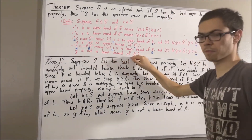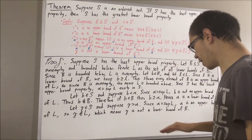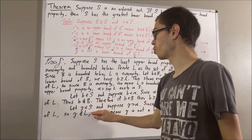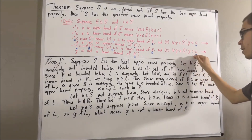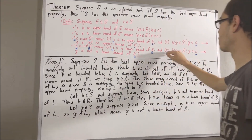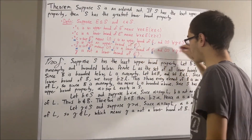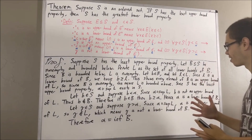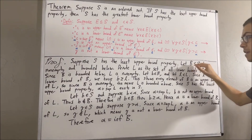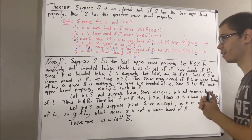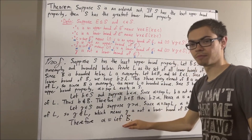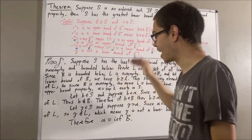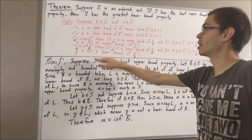So we have shown: if gamma is greater than alpha, then gamma is not a lower bound of B. Since gamma was an arbitrary element of S, we have shown for all gamma in S, if gamma is greater than alpha, then gamma is not a lower bound of B. So we have proven that the second thing holds. We have proven all requirements for alpha to be the infimum of B. Now let's put this all together. We gave ourselves an arbitrary subset B of S which is non-empty and bounded below. From there, we showed that B has an infimum. Since B was arbitrary, we have shown that every subset of S which is non-empty and bounded below has an infimum.